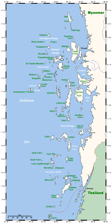Oceanic islands are mainly of volcanic origin, and widely separated from any adjacent continent. The Hawaiian Islands and Easter Island in the Pacific, and Isle Amsterdam in the South Indian Ocean are examples.